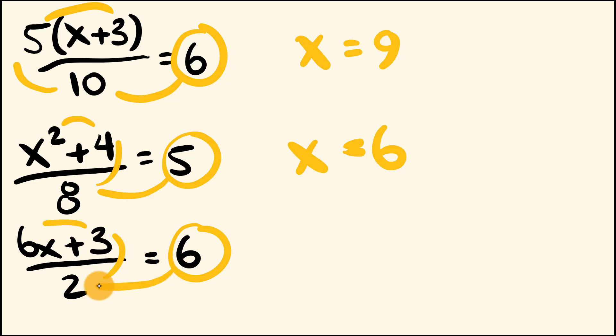6 multiplied by 2 equals 12. 12 minus 3 equals 9. 9 divided by 6, we have x equals 1 and a half. How did you go with that one?